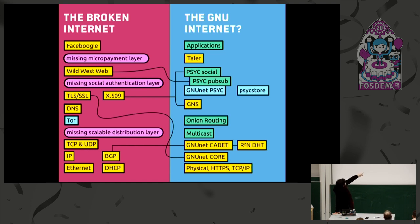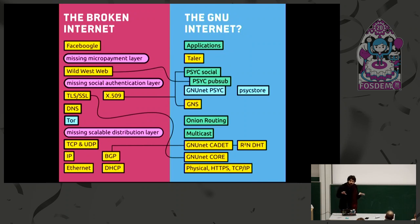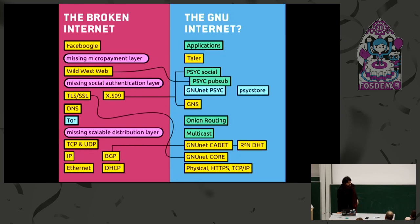GNUnet's Cadet and R5N are both options to replace BGP, and some things that are low level on the GNUnet side actually end up matching higher up the stack on the traditional model. What's useful particularly for our project is that GNUnet provides a low-level framework for authentication — it has cryptographic primitives built into the routing and core networking layers. If you're building an application on top, you can take that for granted. If you can route to another device, you can be sure that device is the one you're accessing based on its public key.